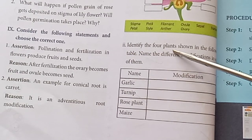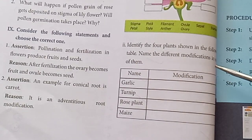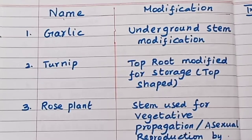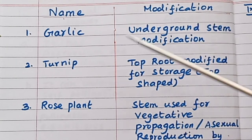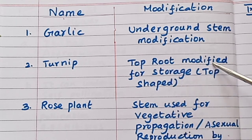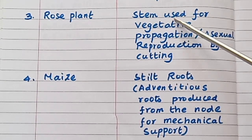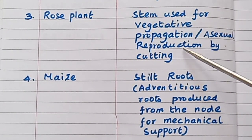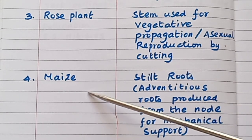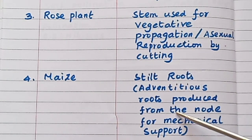Identify the four plants shown in the table and name the different modification in each. Garlic — underground stem modification. Turnip — tap root modified for storage, top-shaped. Rose plant — stem used for vegetative propagation, asexual reproduction by cutting. Maize — stilt roots, adventitious roots produced from the node for mechanical support.